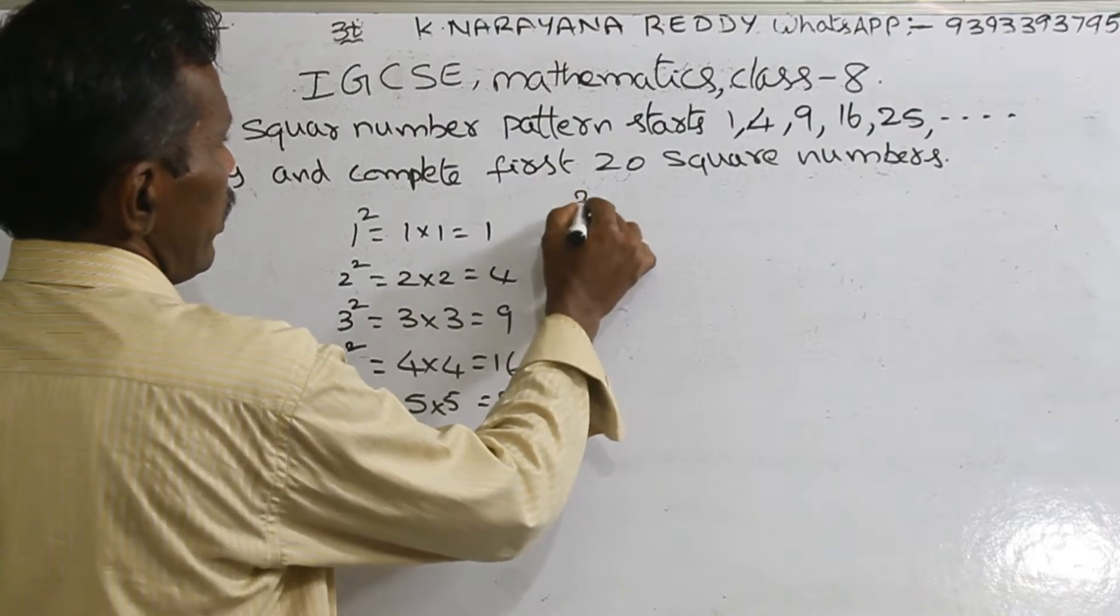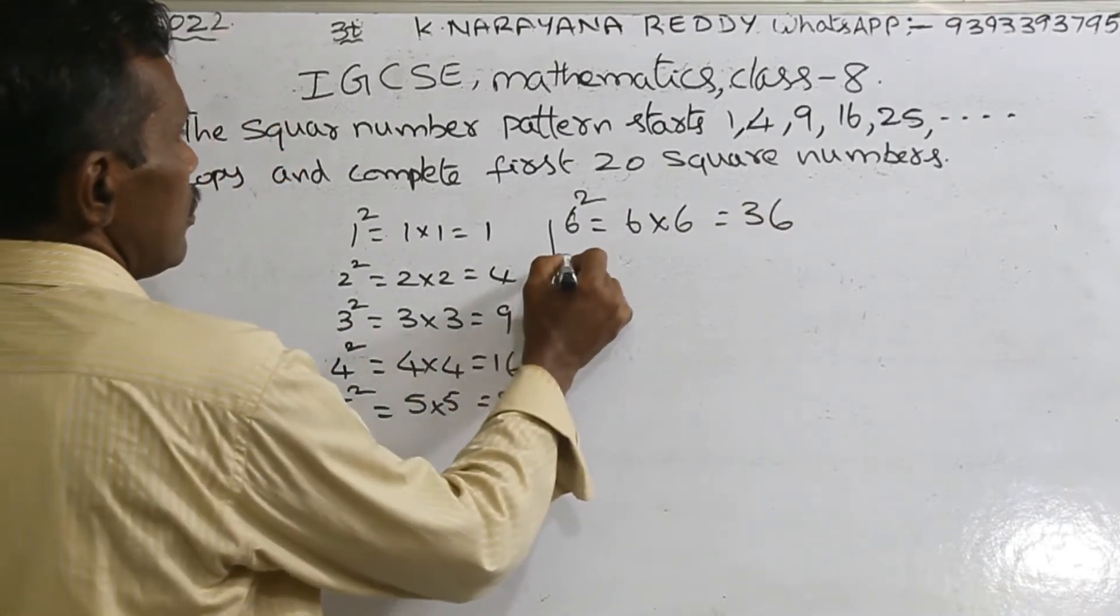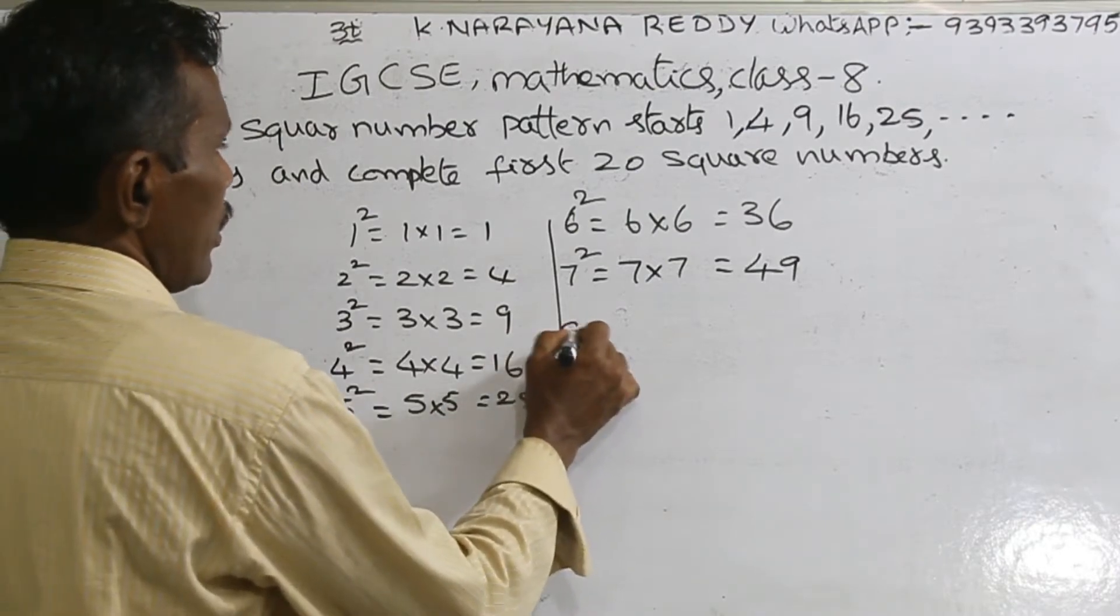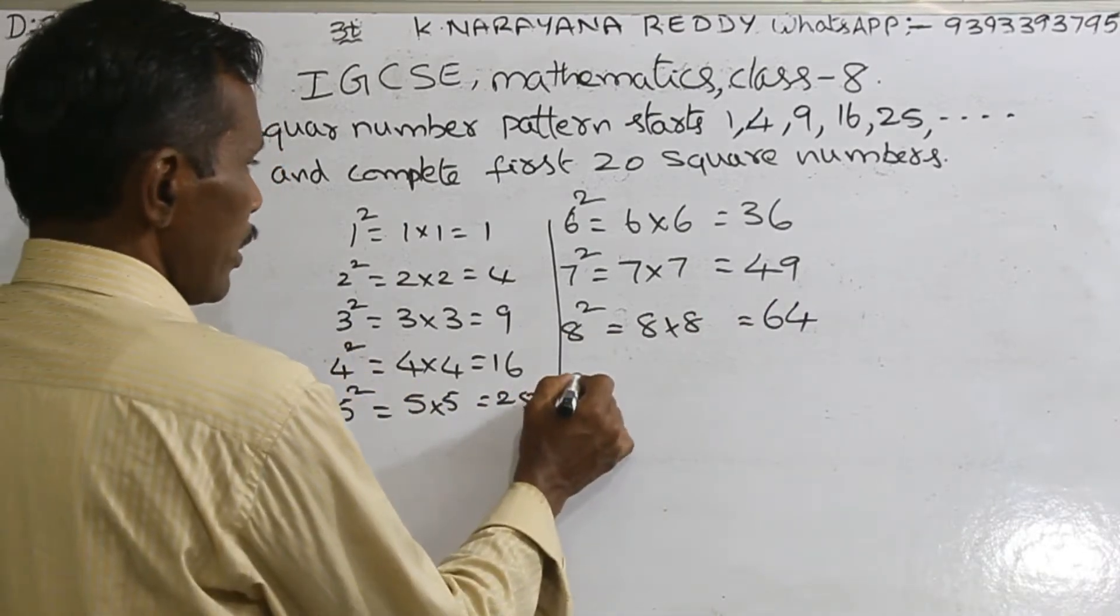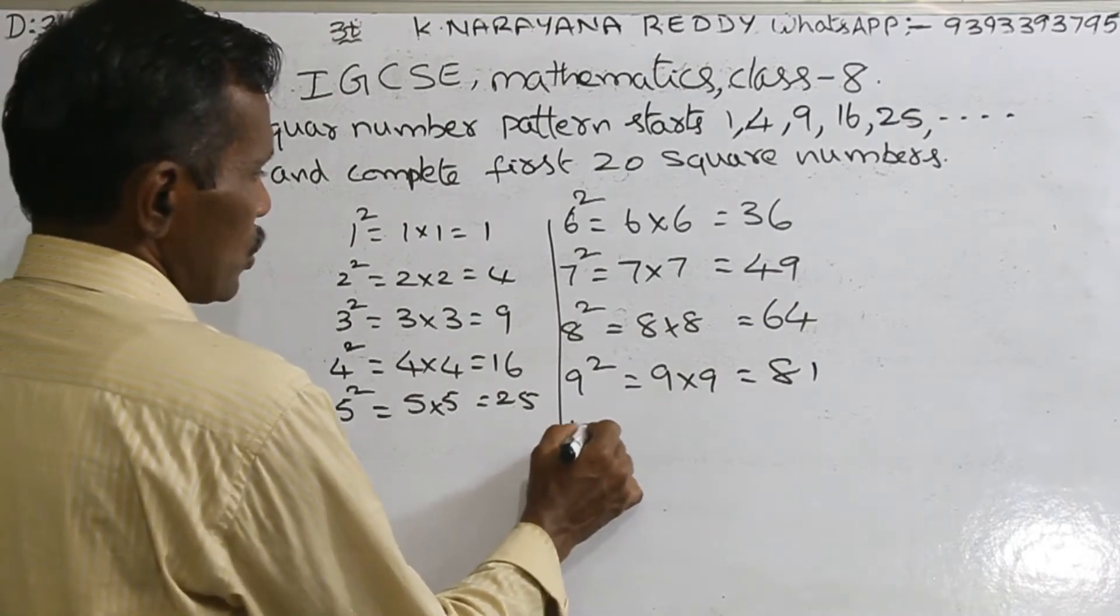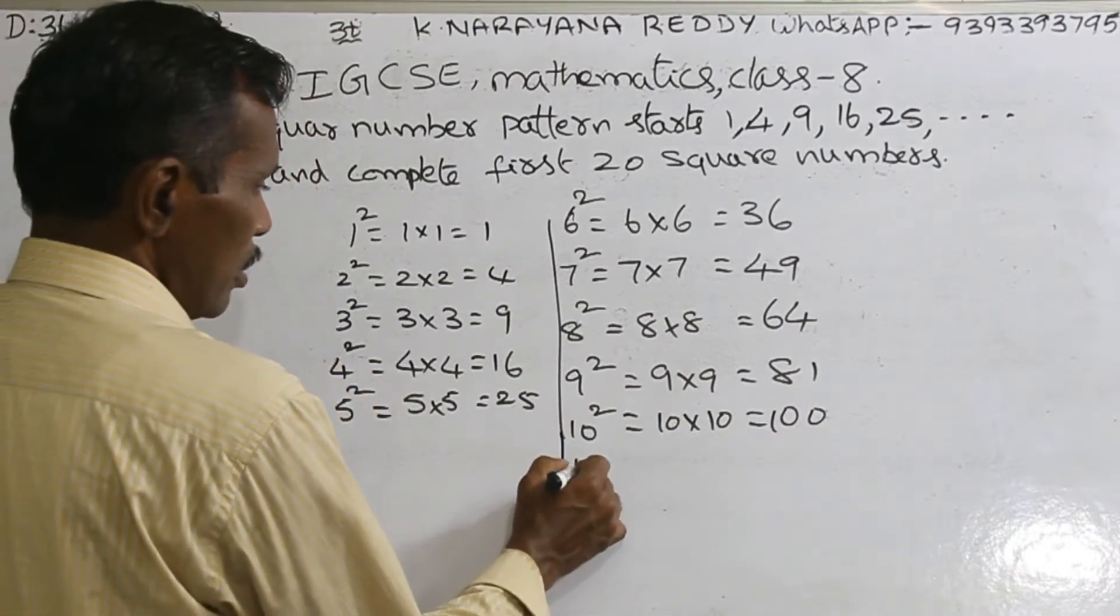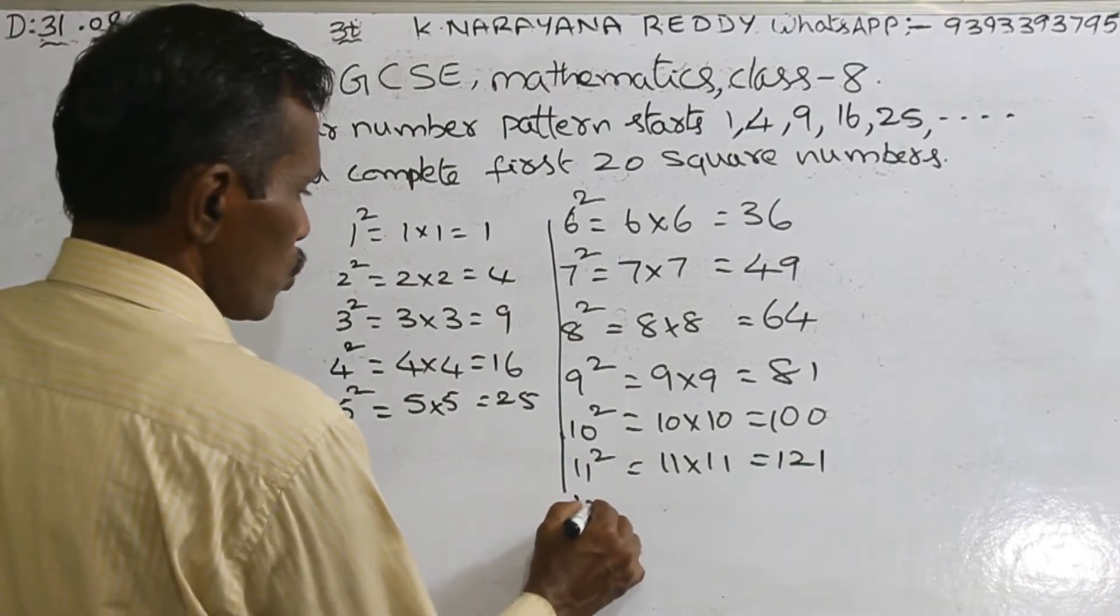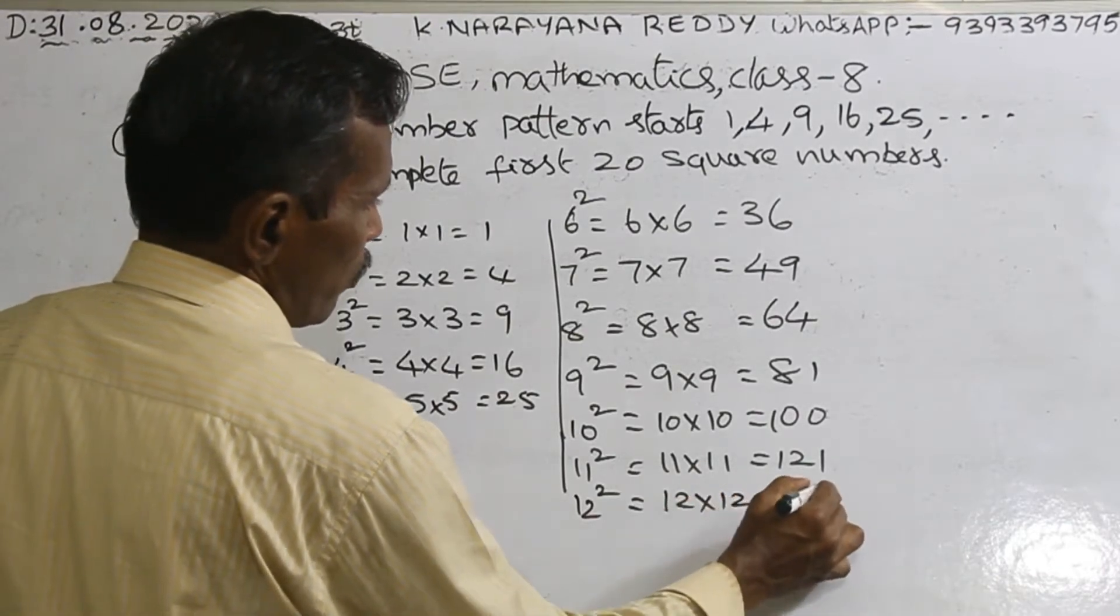See here, 6 square: 6 into 6 equals 36. 7 square: 7 into 7 equals 49. 8 square: 8 into 8 equals 64. 9 square: 9 into 9 equals 81. 10 square: 10 into 10, you know, 100. Same manner, 11 square: 11 into 11 equals 121. 12 square: 12 into 12 equals 144.